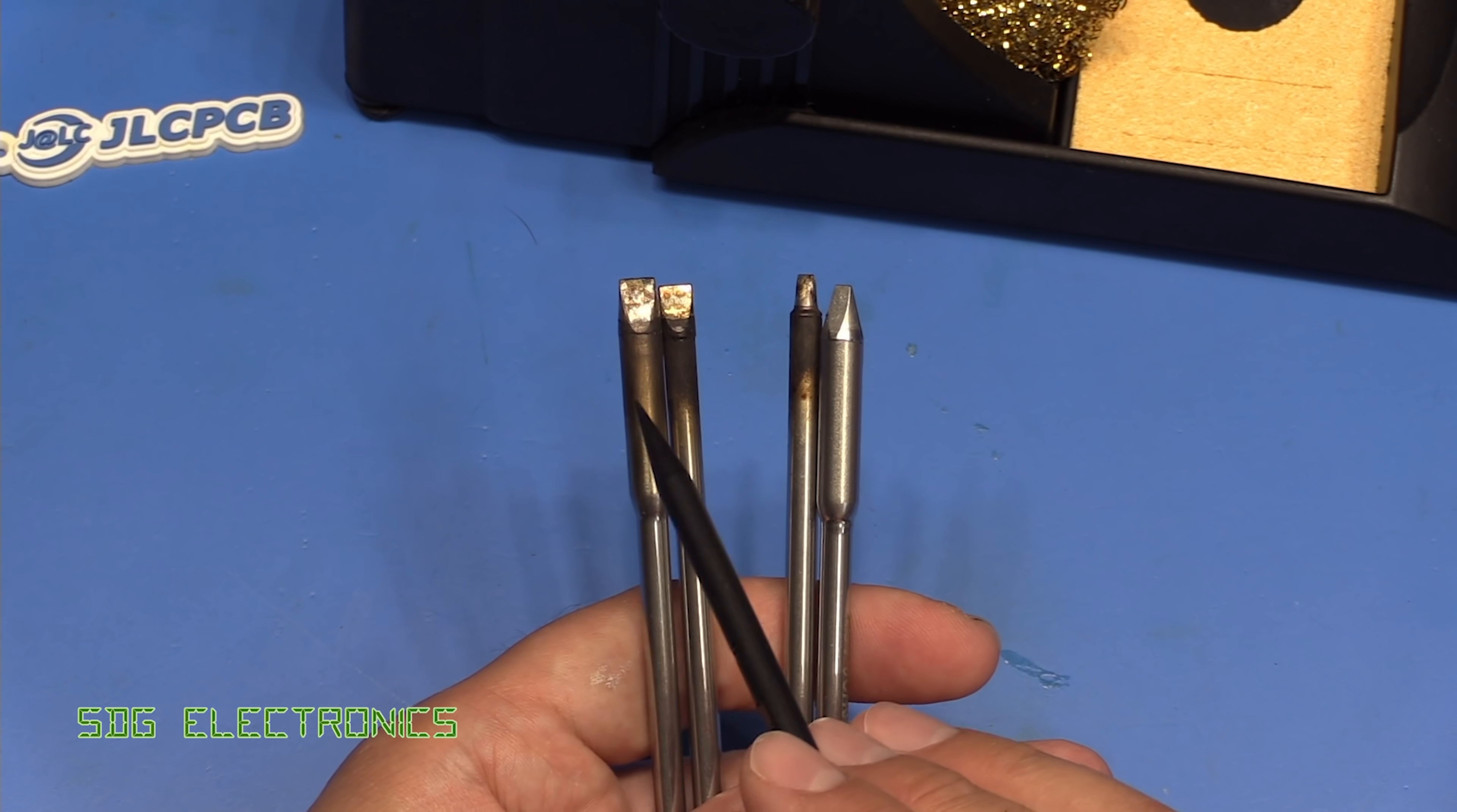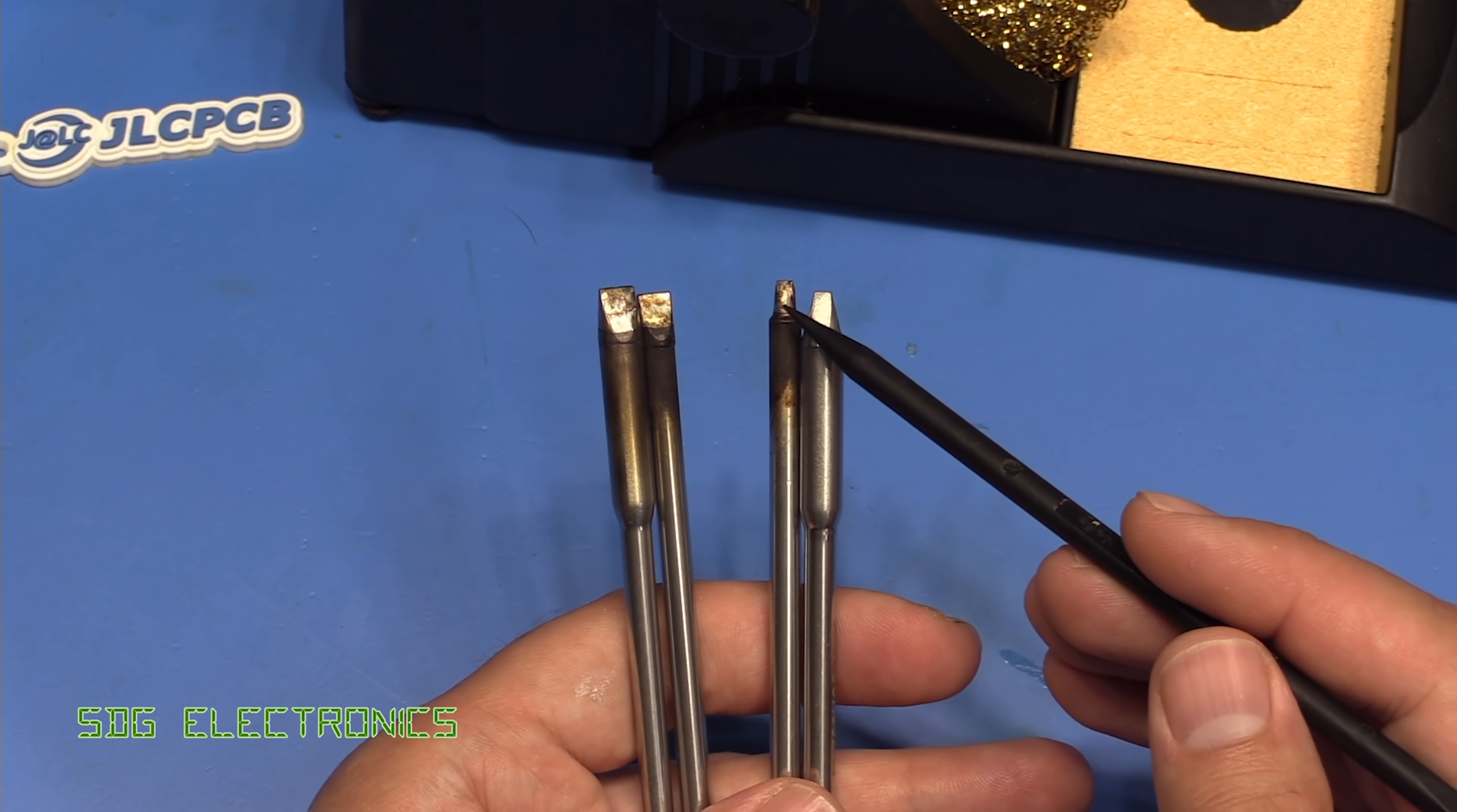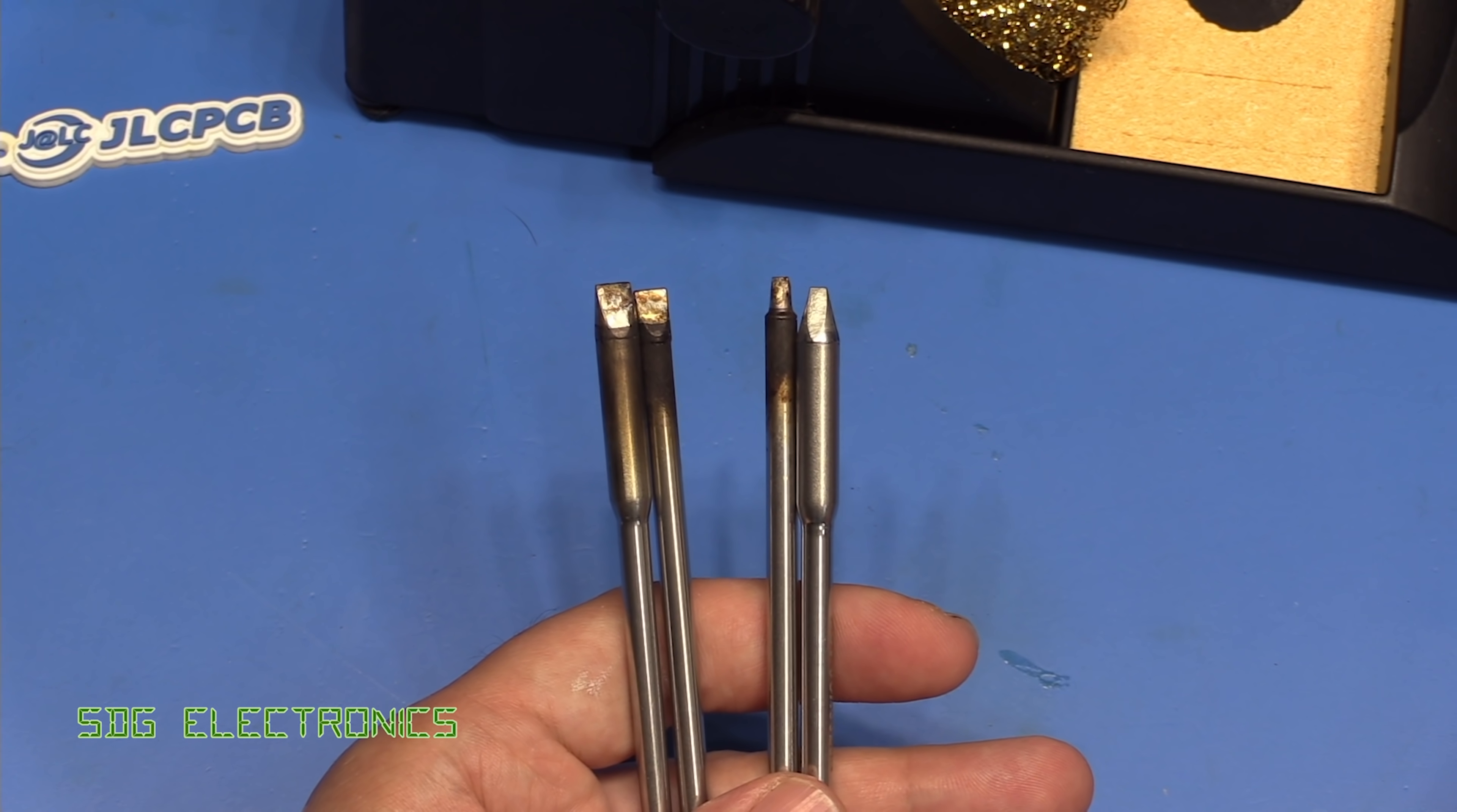These two are the same style, just this is the high thermal demand, so exactly the same geometry, same temperature. Similarly these are two 2.5mm cartridges, but this is the high thermal demand and obviously looks like it'll be able to deliver more power into the joint.